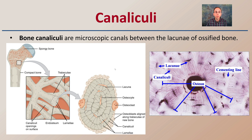The canaliculi are microscopic canals between the lacunae and the ossified bone. Looking at a microscopic view of the bone, we can start to see some of these structures. We have a cementing line evident here, the osteons, and the canaliculi — those little canals — with the lacunae located here. These can be important when looking through a microscope to identify the age of the individual.